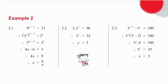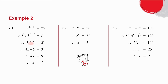In 2.1, the first thing I do is write 9 as 3 squared and 27 as 3 cubed. Powers next to each other, I multiply. I then have an equation with base 3 on each side, which means the exponents must be equal. I solve the equation and get my answer for x.